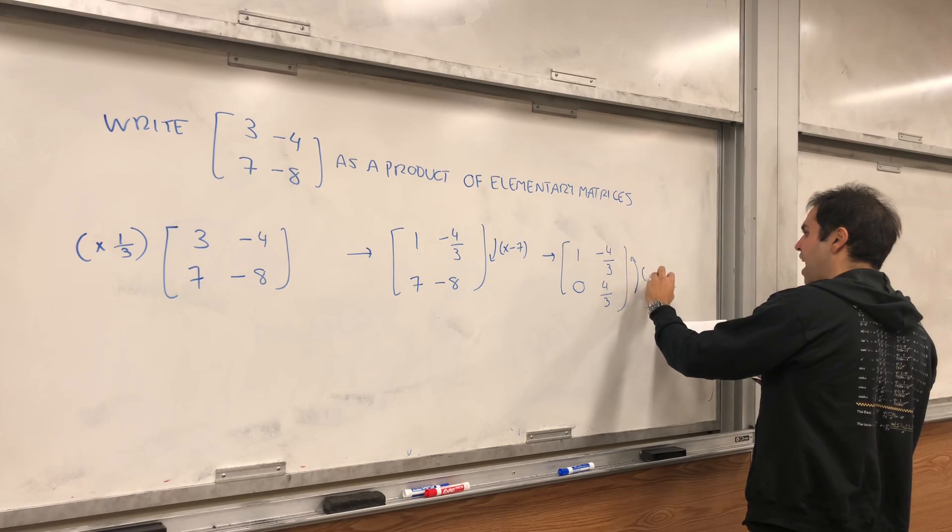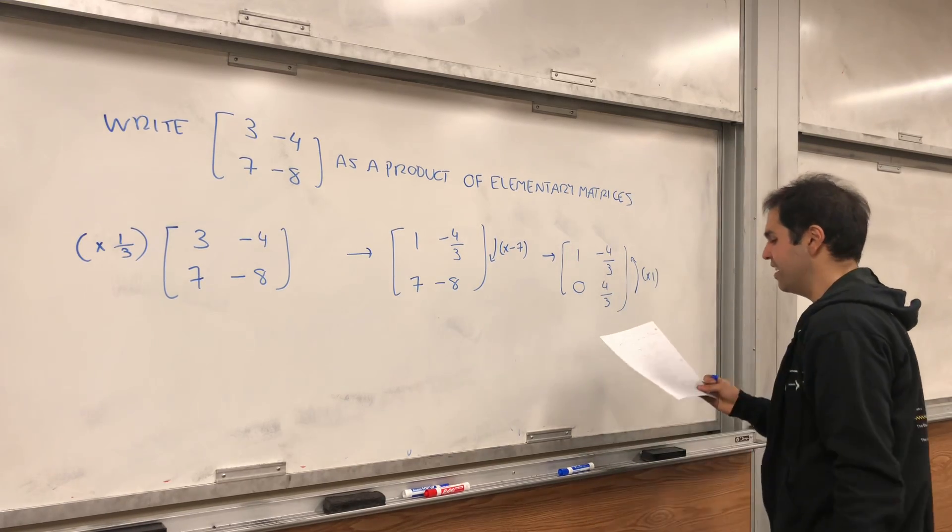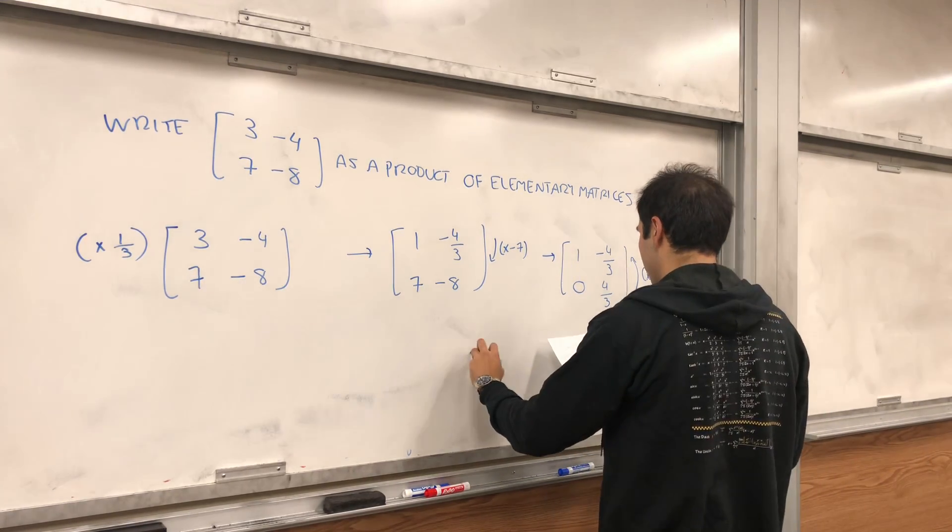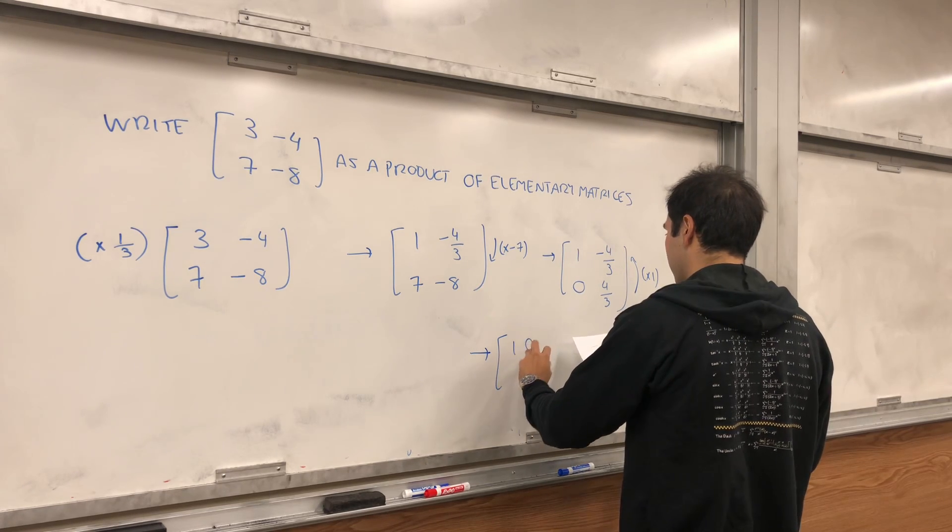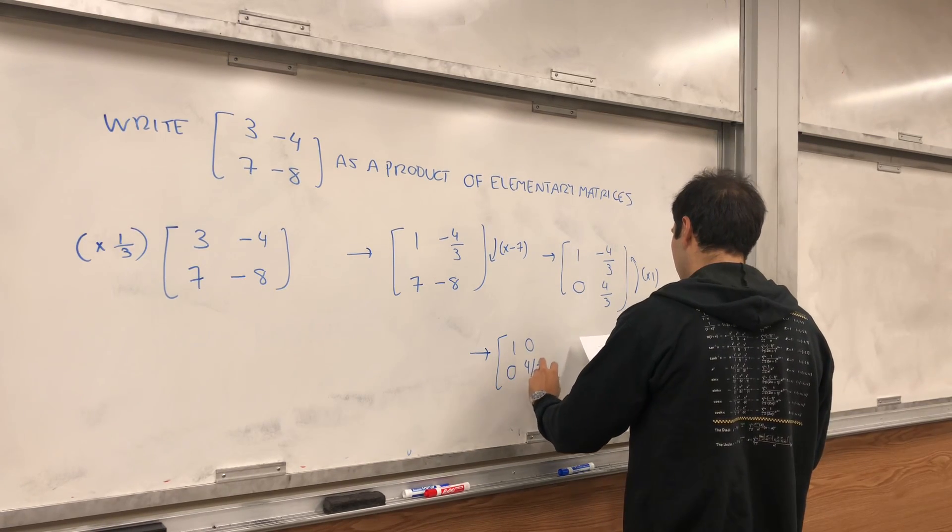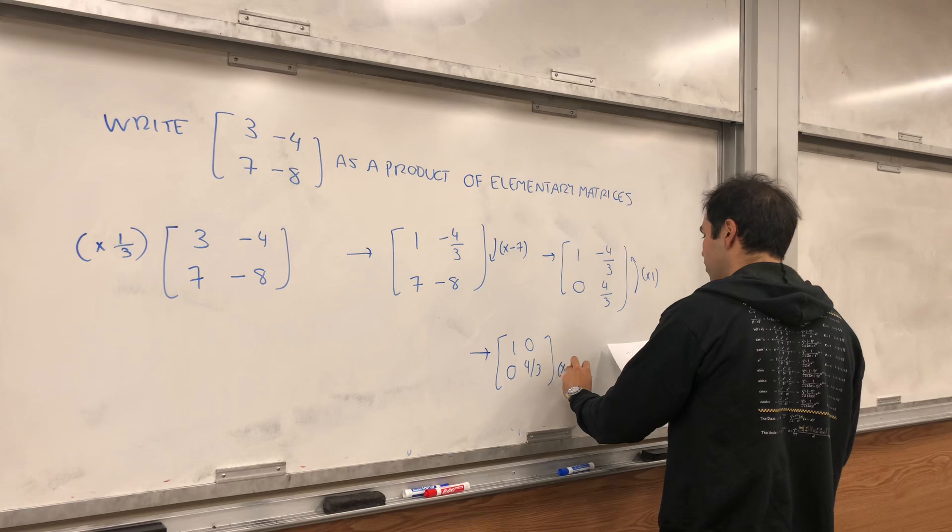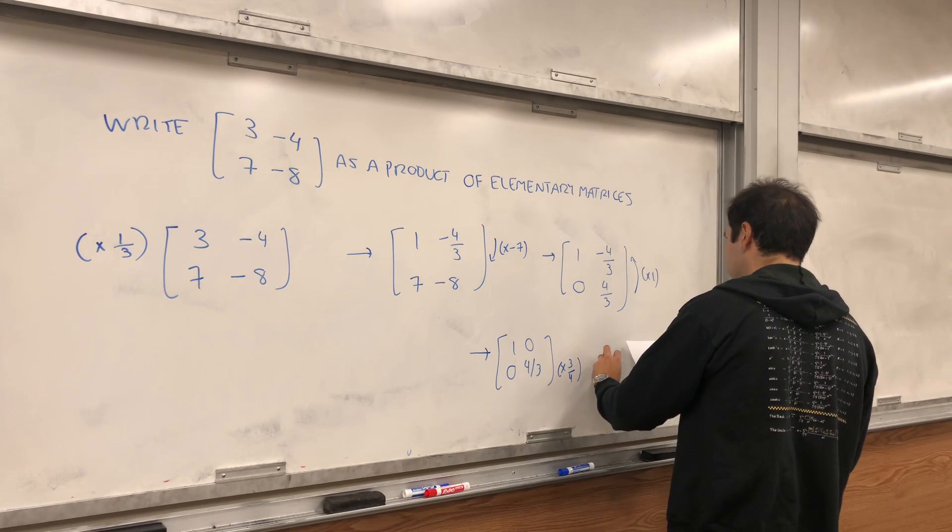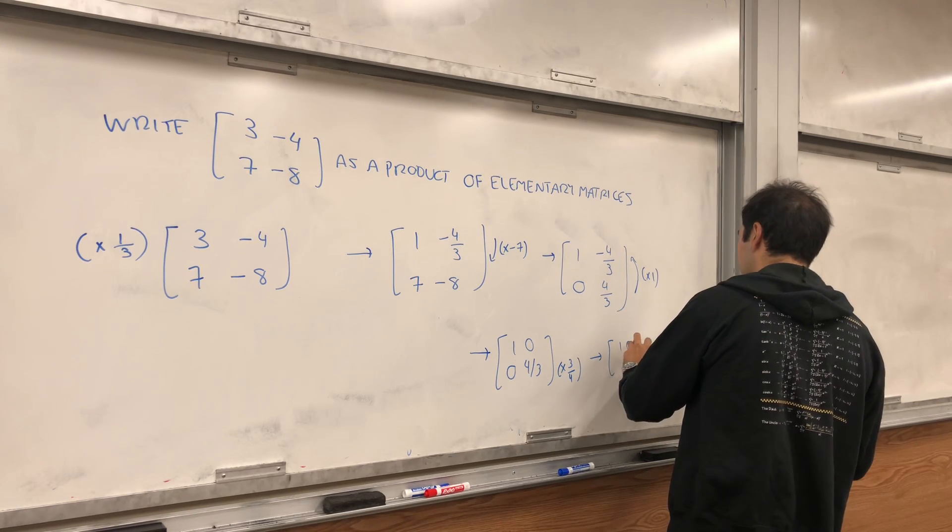Then one thing we can do, we can add this second row to the first row to get 1, 0, 0, 4 thirds. And we can multiply this by 3 quarters, and we get 1, 0, 0, 1.